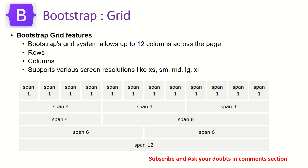A quick recap for new friends: in the previous episode we learned about the basics of the Bootstrap grid. The Bootstrap grid allows up to 12 columns in a particular row. Rows and columns make up the grid, and in any given row we can have up to 12 columns. The 12 columns can be divided equally — for example, 4+4+4, or 8+4, or 6+6.